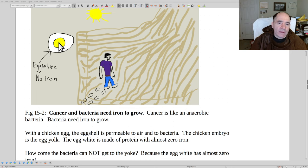The egg white is mostly protein with no iron. So bacteria can get through the eggshell, but they can't get to the egg yolk because they can't travel through the egg white with its lack of iron.